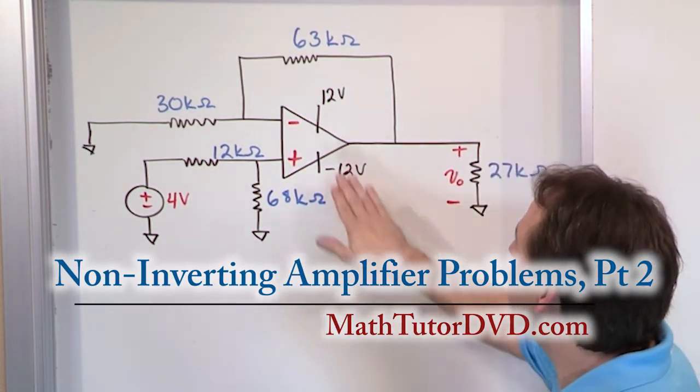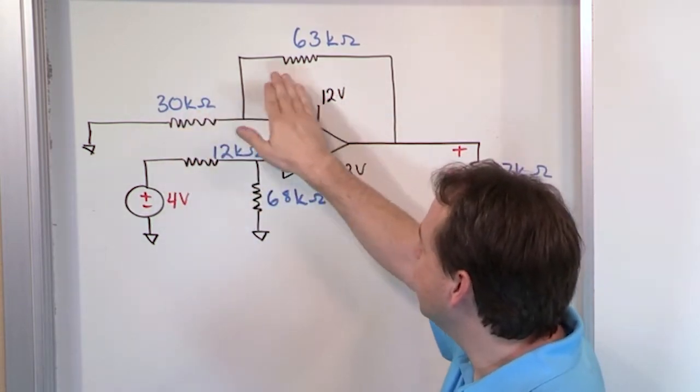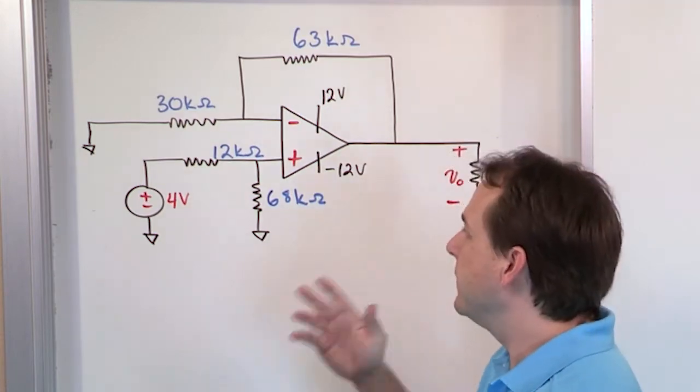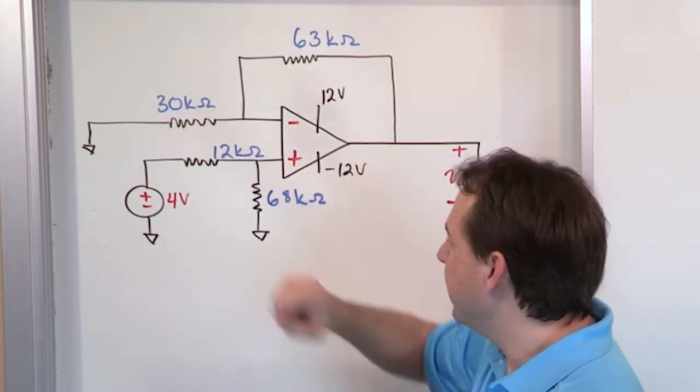Basically, you have feedback resistance, R sub s. This is going to completely govern the gain of this amplifier. The gain's always going to be greater than 1. The gain's going to be 1 plus this divided by this.